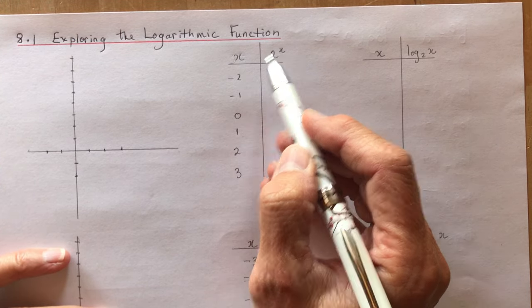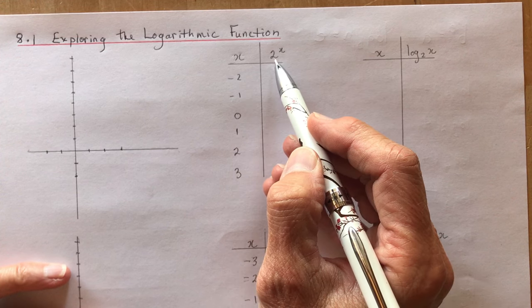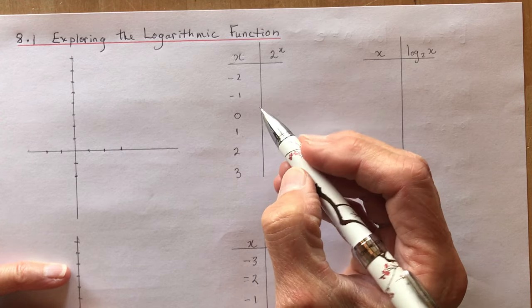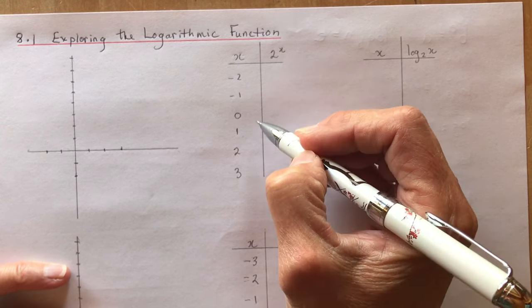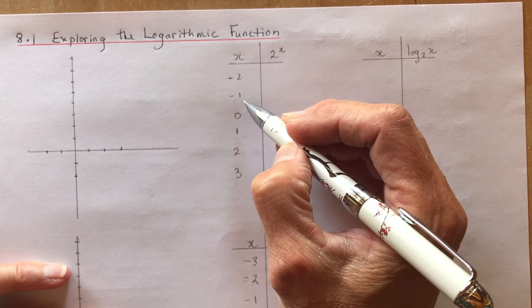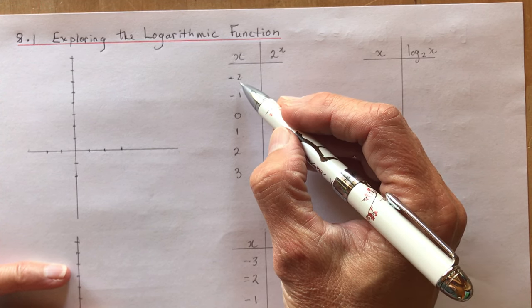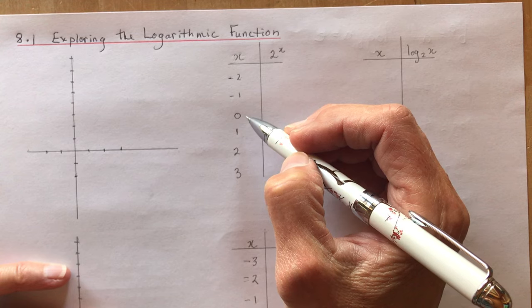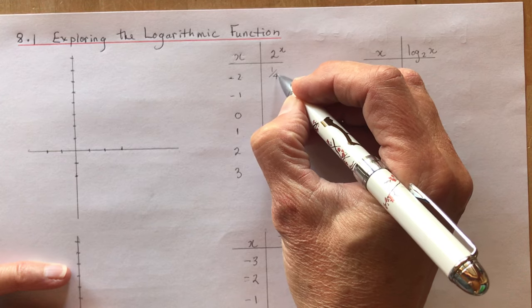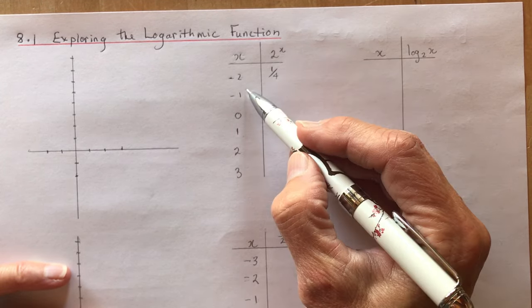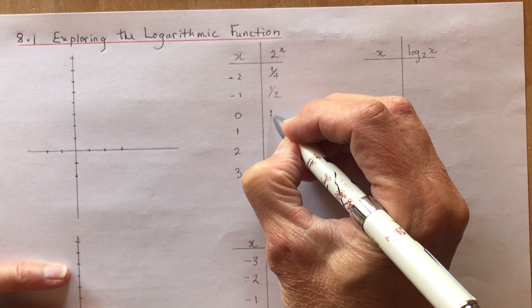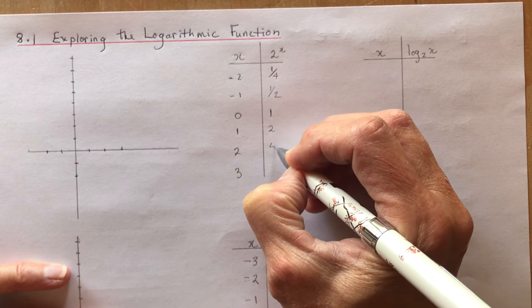Recall your exponent laws. If you don't remember them, you might want to do a little review. In the getting ready section of this chapter there are some questions you can practice on. Remember that 2 to the negative 2 would be 2 squared with the negative meaning 1 over it, which is 1/4. 2 to the power of -1 is 1/2, 2 to the power of 0 is 1, 2 to the power of 1 is 2, 2 squared is 4, and 2 cubed is 8.